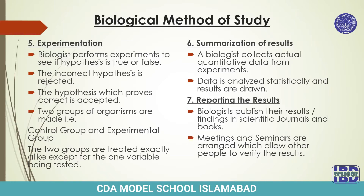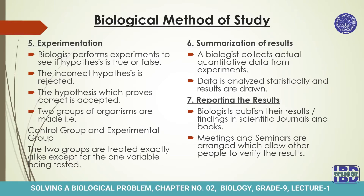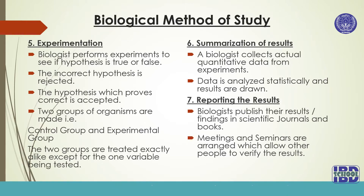The next step is summarization of results. A biologist collects actual quantitative data from experiments — quantitative means the use of digits and numerals. Data is analyzed statistically and results are drawn.